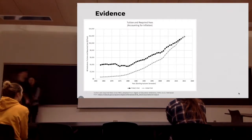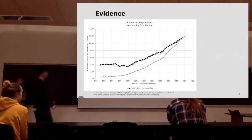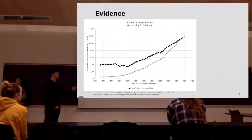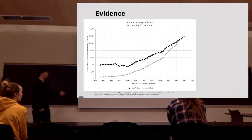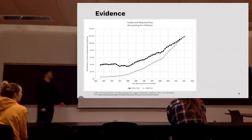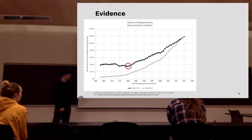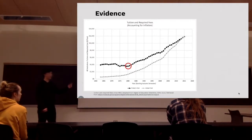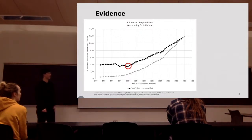We have evidence for that. This is a figure from the government digest showing the trend of college tuition ever since 1963. We can see from the red circle, around 1980, this is the time when college tuition starts to increase constantly, and there is a reason behind that.